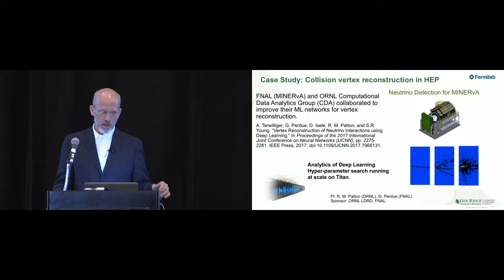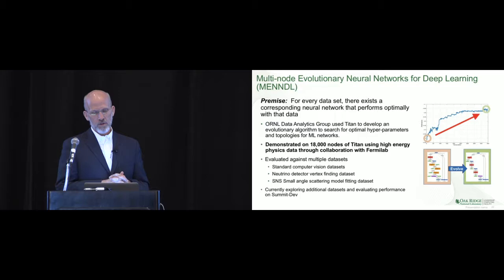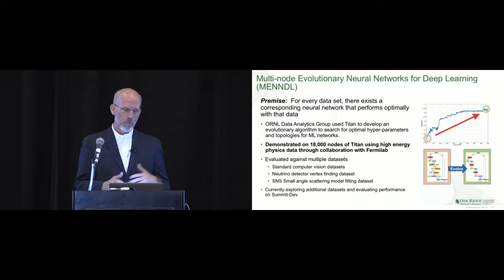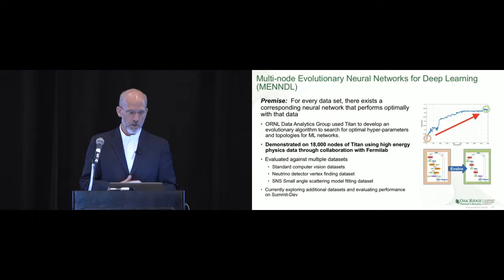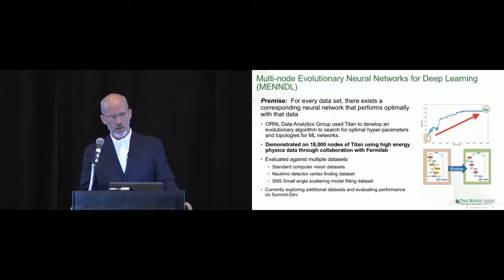The tool applied here was one developed at Oak Ridge called Mendel. The premise of Mendel is that for every data set, there exists a corresponding neural network that performs optimally with that data. You may not know what that architecture is, but it exists. This group said, let's search for it with a genetic algorithm. They developed evolutionary algorithms to search the optimal hyperparameters and topologies of the machine learning networks.